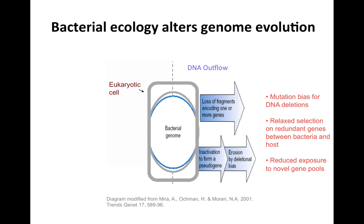When a bacterium becomes intracellular, it faces a one-sided trajectory. Gene acquisition is highly reduced because the bacteria is now constrained within a host cell, enclosed by a host membrane. This leads to rapid gene loss due to mutational bias for deletions. There's also relaxed selection on redundant genes between bacteria and host — the host cell makes the same nutrients, so there's relaxed selection on the bacterial genome to encode those functions. That's generally how we get to small bacterial genomes and ultimately to organelles.